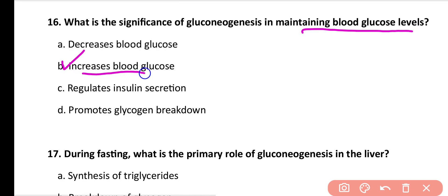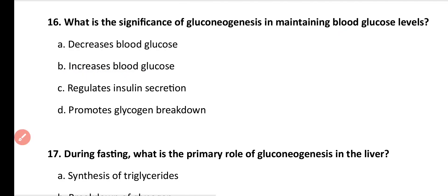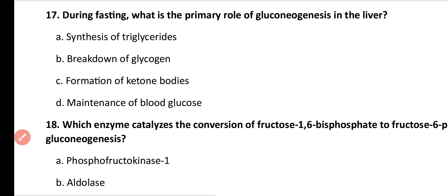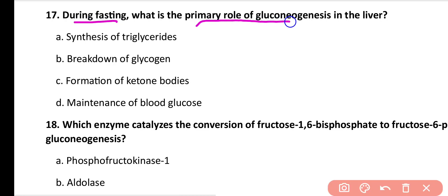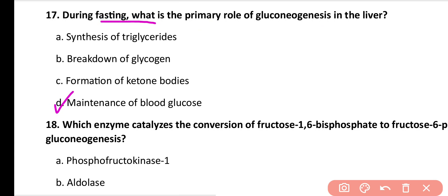Question number 17: During fasting, what is the primary role of gluconeogenesis in the liver? Options: synthesis of triglycerides, breakdown of glycogen, formation of ketone bodies, maintenance of blood glucose. Correct answer is option D. During fasting, gluconeogenesis plays an important role mainly in maintaining blood glucose concentration.